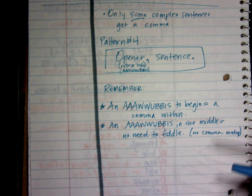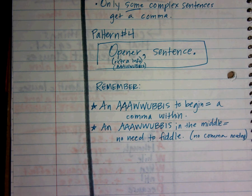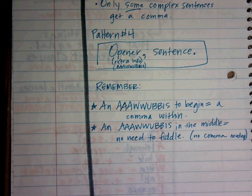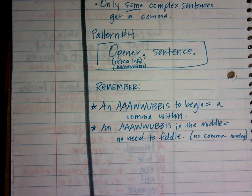Extra info — or this. And it sounds really simple. It is. It is all about locating the allubus word. That's why we worked so hard yesterday to memorize them. It's why we played the find-the-allubus game. You guys noticed that the allubus is always either the first word in the sentence or it's somewhere in the middle. An allubus to begin equals a comma within. If you have an allubus as your first word, you're always going to have a comma somewhere in that sentence. If you have an allubus in the middle of your sentence, you're not going to have a comma with it.